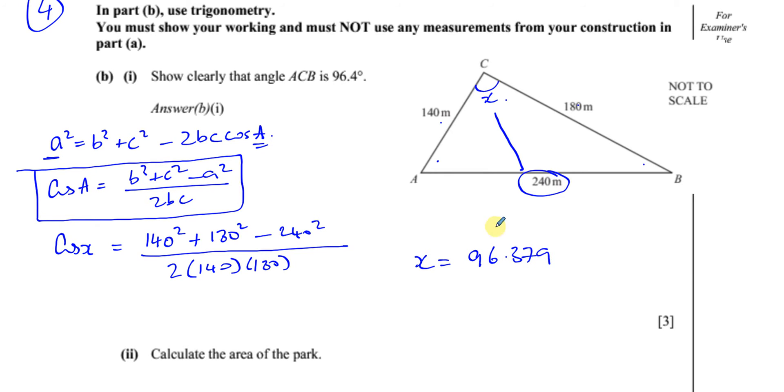So you have 96.379. So when it says show clearly that this is the angle, you should always show it rounded to more than the number of decimal places needed. And then in the end, show that it rounds to what they will require, which is 96.4 degrees. And there we have shown it clearly. And there we have the answer. The method marks is if you've got by writing this step down here.